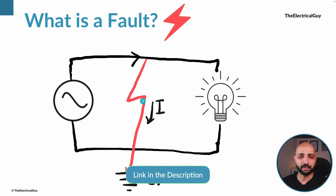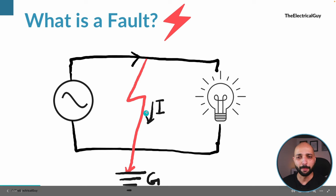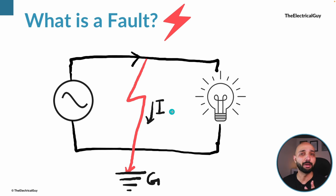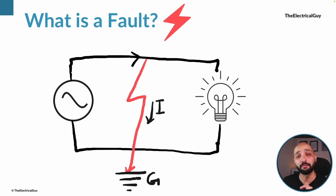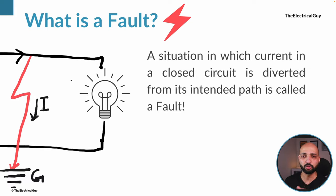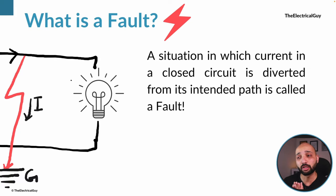Since the live part is touching the ground, the intended path for the current is now disturbed. As a result, the light bulb is not glowing and current is flowing through the red path. This situation — wherein the current is diverted from its intended path — is what we call a fault. A situation in which current in a closed circuit is diverted from its intended path is called a fault.